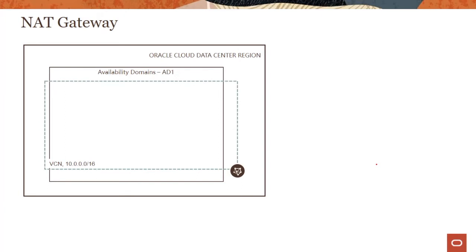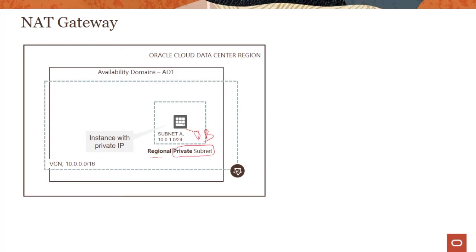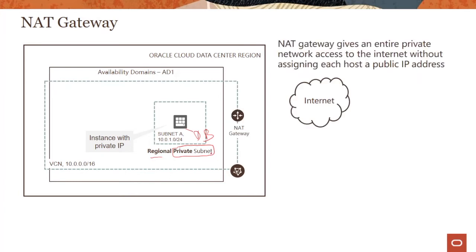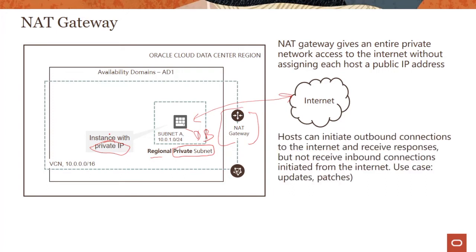A NAT gateway accepts IP packets bound for the internet coming from private subnets, sends those packets to their destination, and sends the returning packets back to the source. Similar setup as before but now with a private subnet hosting your database, which needs to be regularly patched. The NAT gateway gives the private subnet access to the internet without assigning any public IP. Hosts can initiate outbound connections and receive responses, but cannot receive inbound connections initiated from the internet.